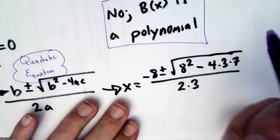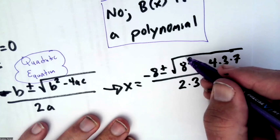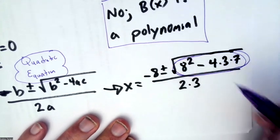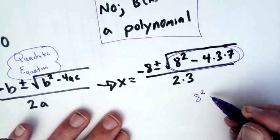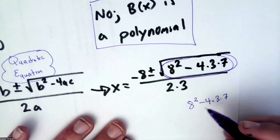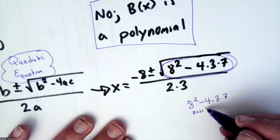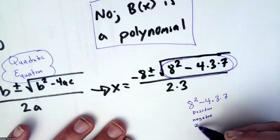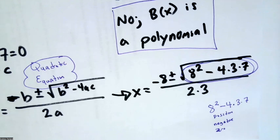Using 8 squared, the important thing to check out is, can I actually even take this square root? So is 8 squared minus 4 times 3 times 7, is that positive, negative, or 0? It's certainly not 0, but I can't do that without a calculator.